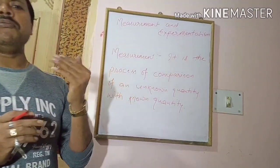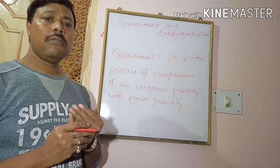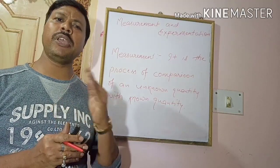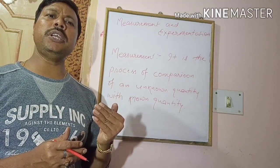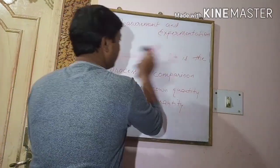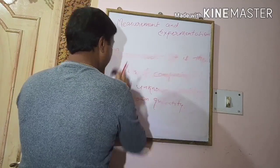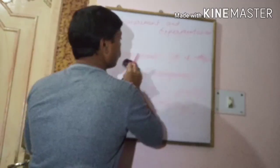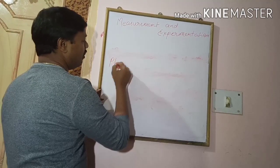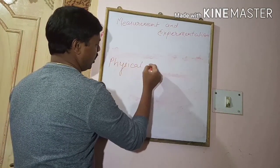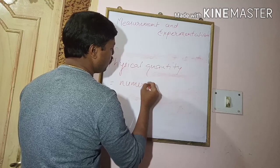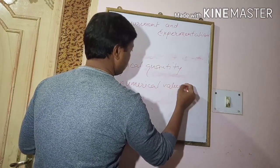Physical quantities are measured with different units. Physical quantities are quantities which can be measured, like length, mass, time, volume, density, etc. We always express a physical quantity as a numerical value along with a unit.